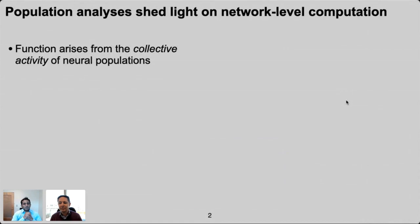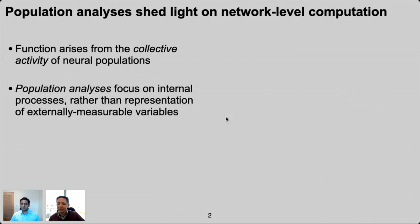We know that the rich sensory, motor, and cognitive functions that the brain performs arise from the collective activity of vast populations of neurons. Neural population analyses are a critical tool for probing these functions. Rather than focusing on how a neuron's activity relates to externally measurable variables like stimuli or movement, population analyses allow us to probe the internal processes — how the activity of different neurons relates to each other — and really give us a window into the computation of a network.